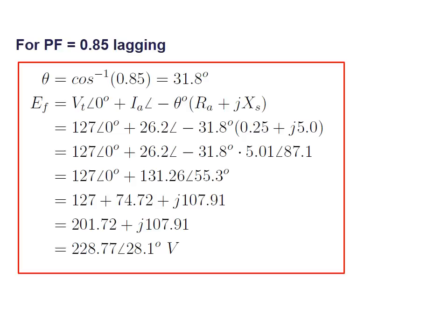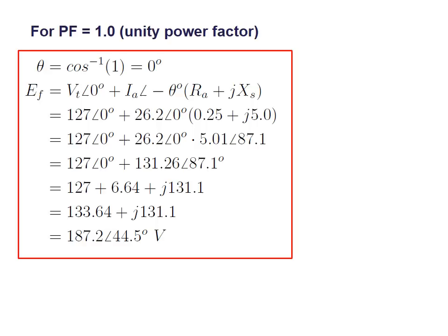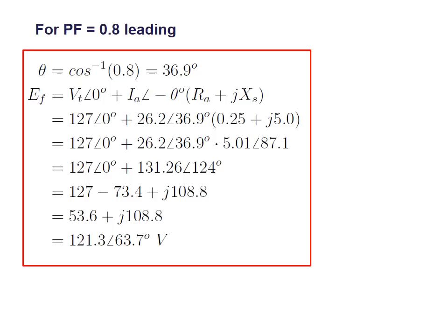We apply the same procedure for the other conditions. For unity power factor, the inverse cosine of 1 is zero, and the field voltage is 187.2 volts at phase 44.5 degrees. For power factor 0.8 leading, the inverse cosine of 0.8 is 36.9 degrees. Applying these conditions to the previous equation gives a field excitation voltage of 121.3 volts in magnitude.